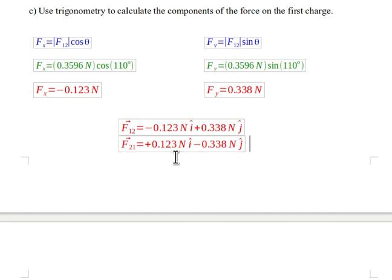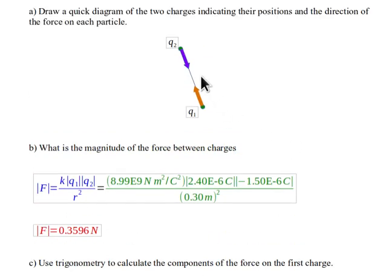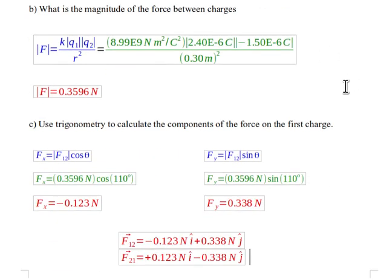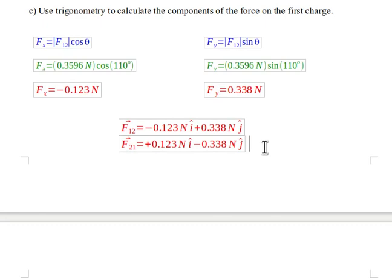And that shows us that we have a positive x component and a negative y component. If you look back at the diagram, notice that positive x component and minus y component puts that arrow down into the fourth quadrant, as we would expect. So even though it starts at a different place, we can still express the force in the same way as just the same force in the opposite direction.